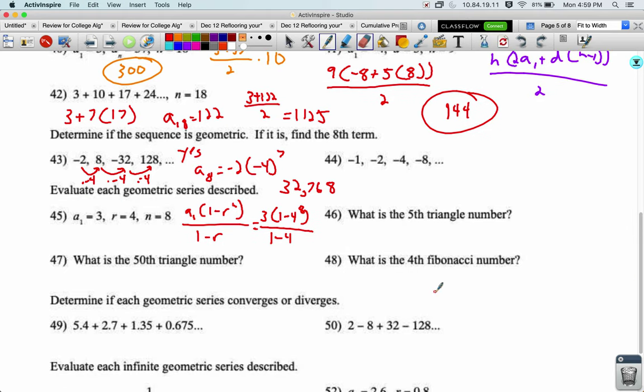1 minus 4 to the 8th is negative 65,000 something, times 3, it's another big number, divided by negative 3, it gets us 65,535.